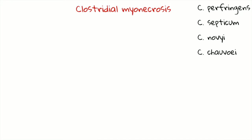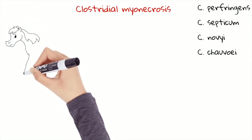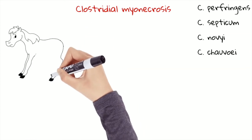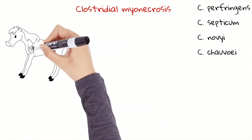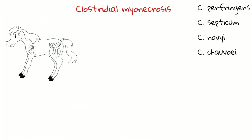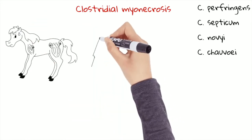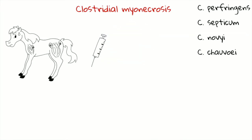But where are these bacteria from? Well, clostridia can even be already present in the muscles as spores and become activated by puncture wounds or other trauma. One of the most frequent causes of this myopathy are intramuscular injections, especially with irritant products such as non-steroidal anti-inflammatory drugs.